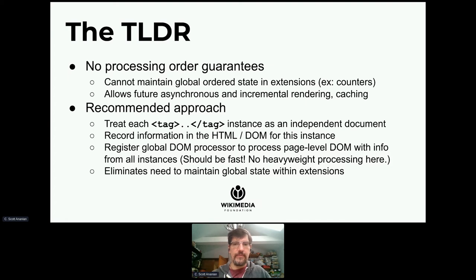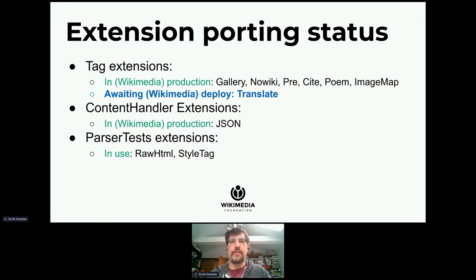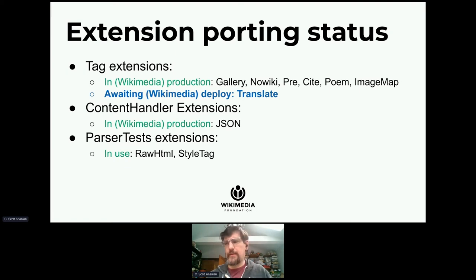Hopefully that post-processing is going to be fast, so you're not expected to do heavyweight processing. If you needed to maintain a counter that goes from one to N for every instance on your page, you do a quick DOM pass to extract those instances of the tag and assign the numbers to them, eliminating the need for global state. We've already ported a number of extensions — some with global state dependencies like Cite, which maintains a global list of all citations. We're about to deploy Translate, which is the latest one we've ported. We've also ported a content handler, the JSON content handler, as a proof of concept.